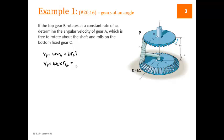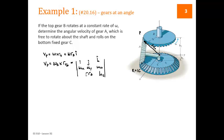Now we look at gear A and write the velocity of point P from that gear's perspective. The gear rotates around the fixed center point with some omega_A, which is what we're trying to find. We cross omega_A with the distance from the fixed point to point P to find V_P in terms of omega_A. Omega_A has three unknown components, so we write the cross product as: [i-hat, j-hat, k-hat; omega_AX, omega_AY, omega_AZ] crossed with R of P with respect to O.